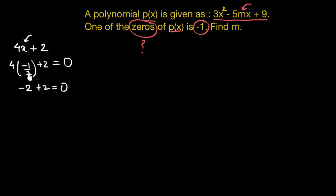So 4 times negative half is negative 2 plus 2 is equal to 0. Hence, negative half, this negative half would be the zero of this given polynomial.